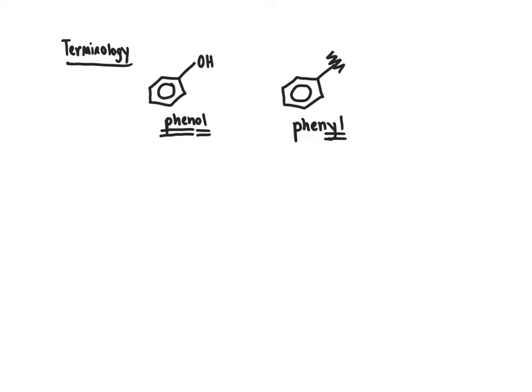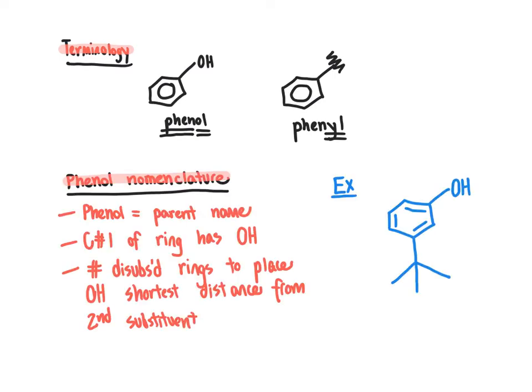We're going to look at how to name molecules that have additional functional groups built on the phenol scaffold. The guidelines for naming phenol-containing molecules are as follows: first, use phenol as the parent name. Carbon number one of the ring is by definition the carbon atom that has the alcohol group on it. If there is a second group on the ring, number the ring to take the shortest distance from the alcohol carbon to the second substituent.